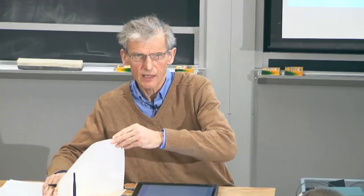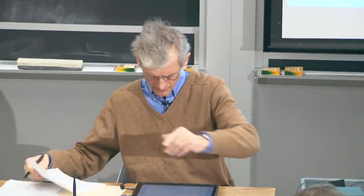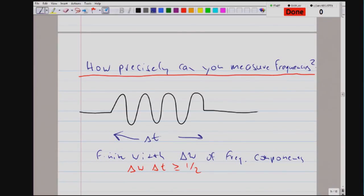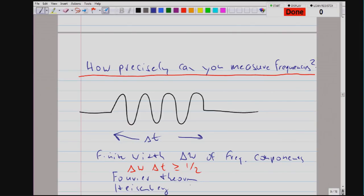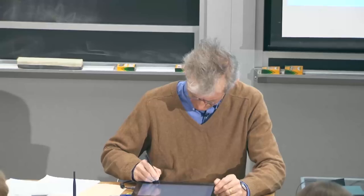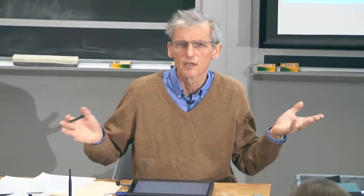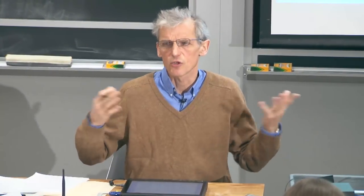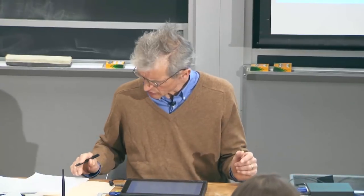The case of one half is realized for Gaussian wave packets. This Fourier limit should remind you of Heisenberg's uncertainty relation. Fourier limit and Heisenberg's uncertainty relation are related, because what Heisenberg expressed turns out to be simply the limit due to the wave nature of matter.